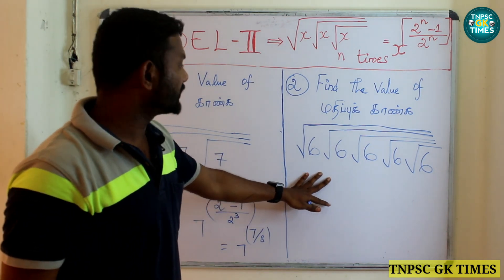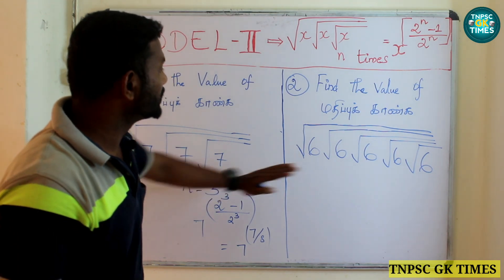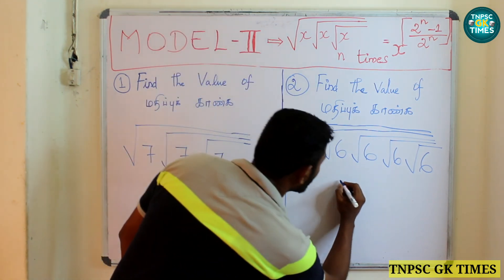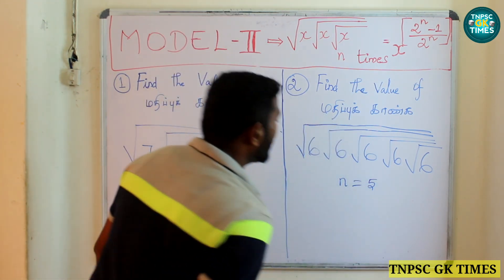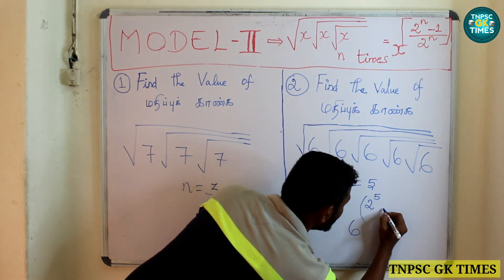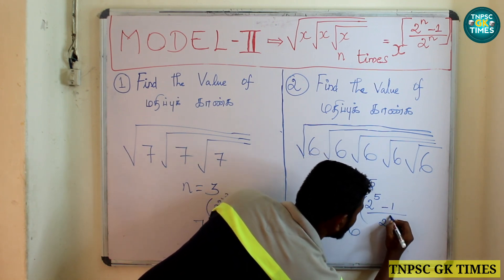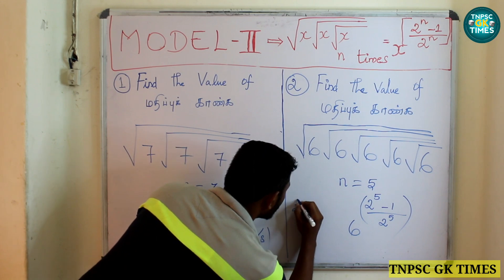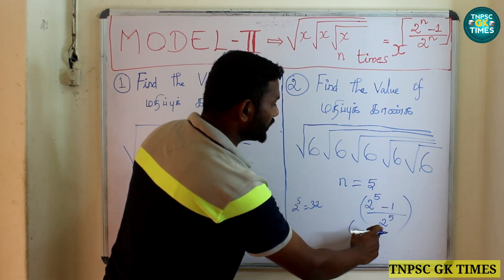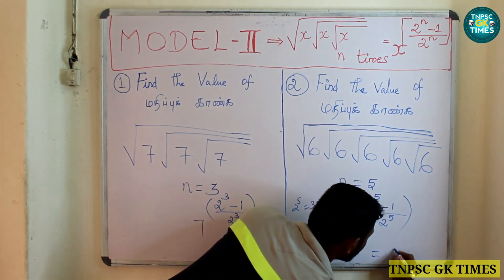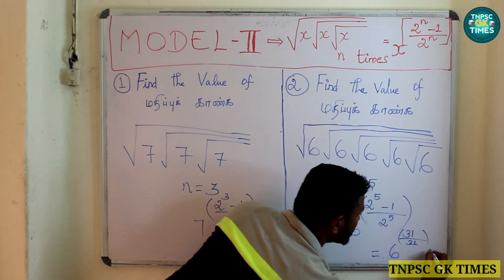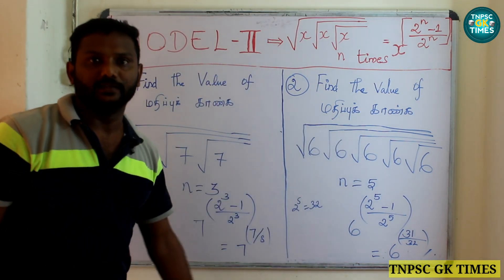Let's see another example. Root 6, root 6, root 6 — given 5 times, so n = 5 and x = 6. Applying the formula: 6 power (2^5 − 1) divided by 2^5. 2 power 5 is 32, so 32 minus 1 is 31. The answer is 6 power 31 divided by 32.